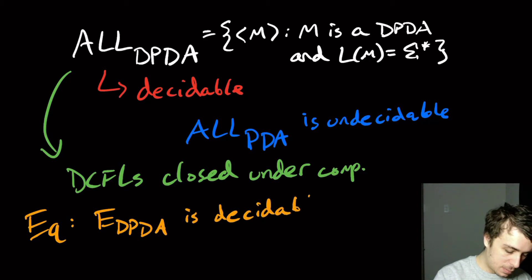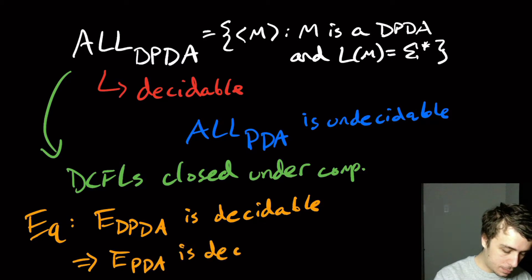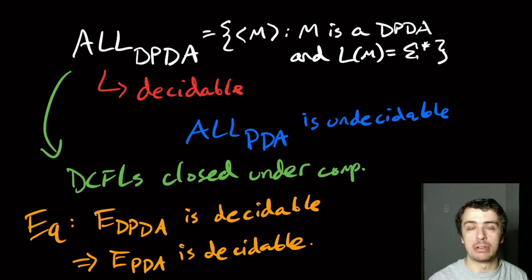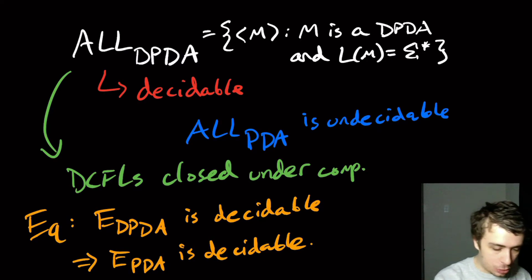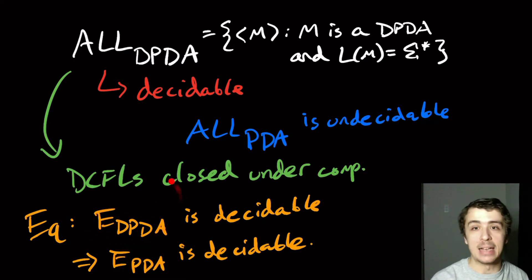And we know that E_PDA is decidable because you can just convert that into a context-free grammar, and we have this idea of productive variables if they can actually produce a string at all. And the PDA version certainly can handle the deterministic version, and so we're done.